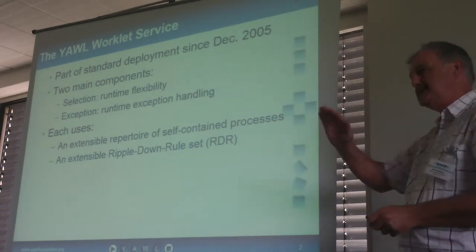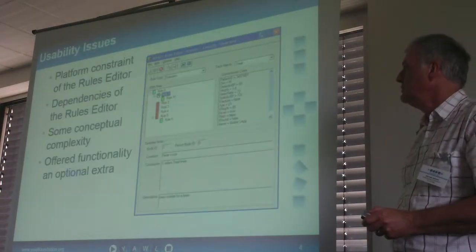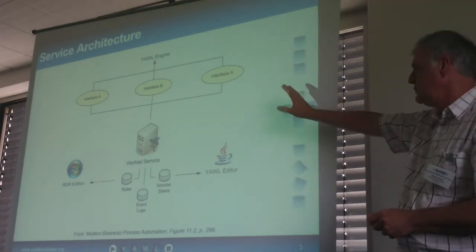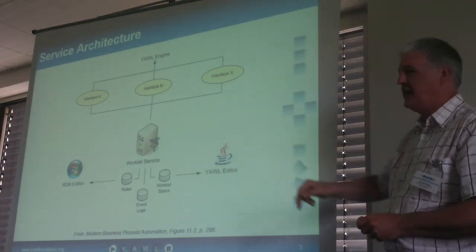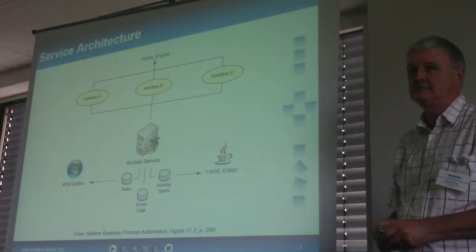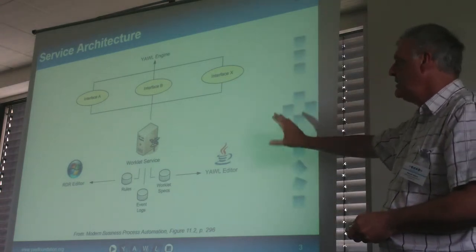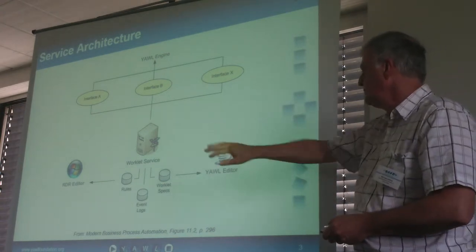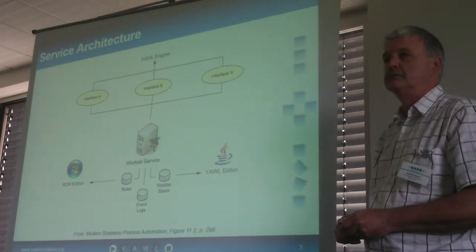So, do this thing if it's true, except if this other thing is true, in which case you do the conclusion of that particular rule. This is how the worklet service used to look. The worklets for the selection component were created in the YAWL Editor because a worklet is simply a YAWL specification — typically a small one — which at runtime is used to substitute for particular tasks in a parent process. Off to the right, we had rules defined by a rules editor.